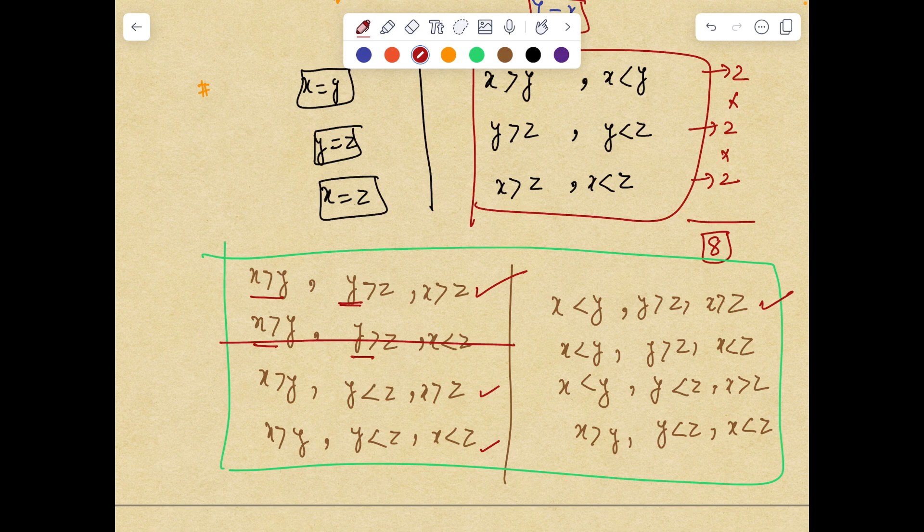y more than x and x is more than z, so y less than z is valid. x is more than y and x is less than z: this is wrong. This is invalid. x more than y: this is valid.